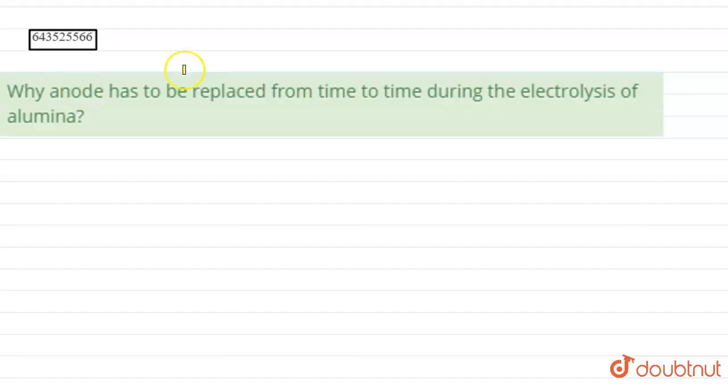we have been asked why anode has to be replaced from time to time during the electrolysis of alumina. We need to tell why we have to remove or replace anode again and again when we electrolyze alumina.